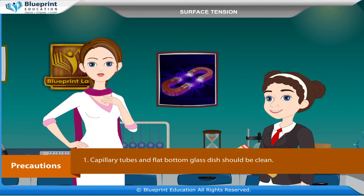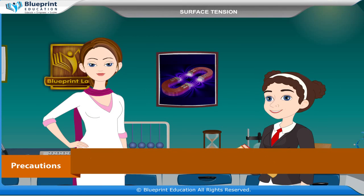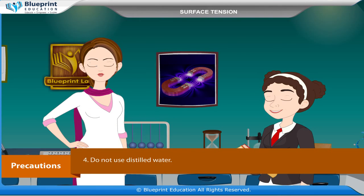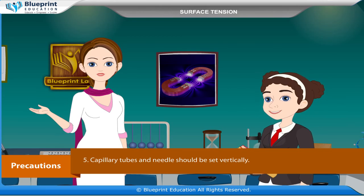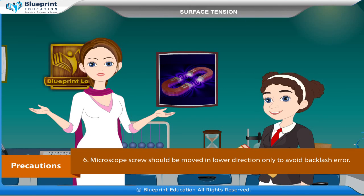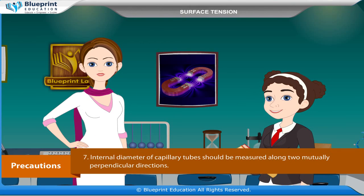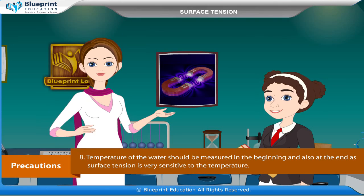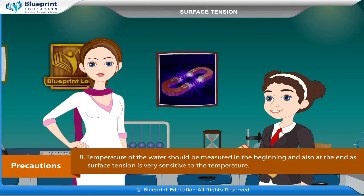Precautions: Capillary tubes and flat bottom glass dish should be clean. Capillary tubes should be of uniform bore. Water should be free from dirt and grease. Do not use distilled water. Capillary tubes and needles should be set vertically. Microscope screws should be moved in the lower direction only to avoid backlash error. Internal diameter of capillary tubes should be measured along two mutually perpendicular directions. Temperature of the water should be measured at the beginning and also at the end, as surface tension is very sensitive to temperature.